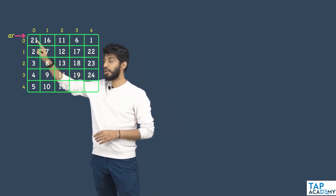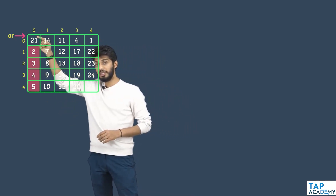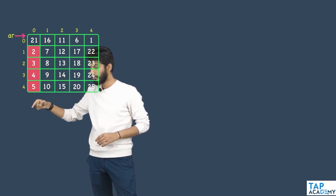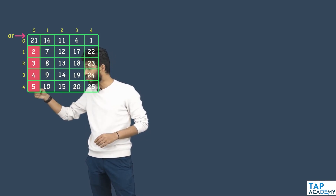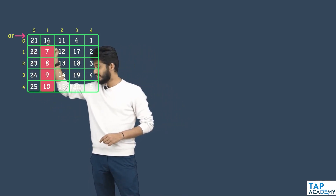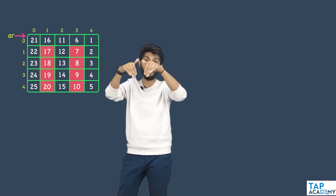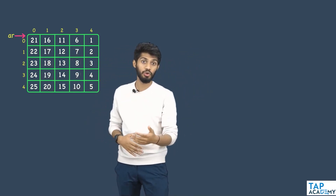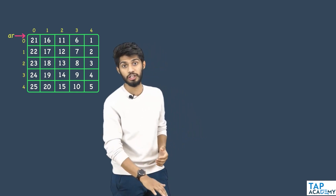Whatever happened in this particular row repeats for all the rows. The first elements of each column get swapped with the last column, all elements in the second column get swapped with the last-second column. For 100 rows and 100 columns: first with 100th, second with 99th, third with 98th, and so on. Now let us write the algorithm for this logic.